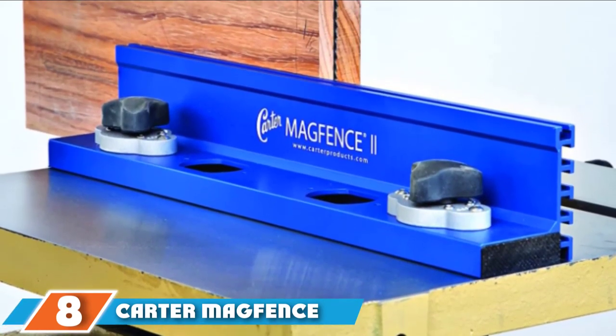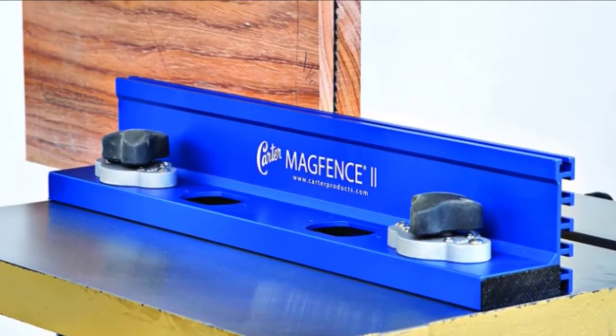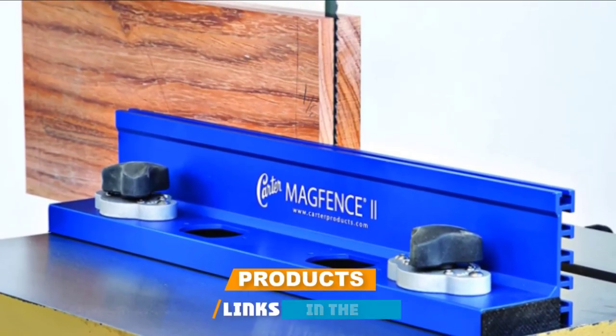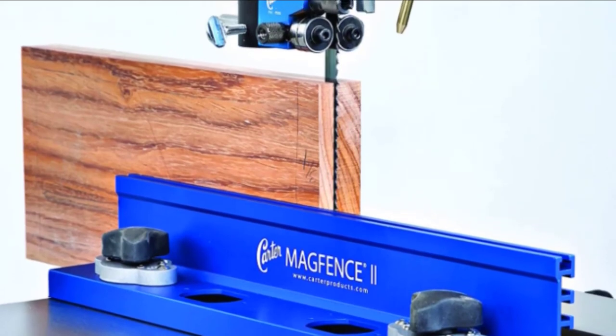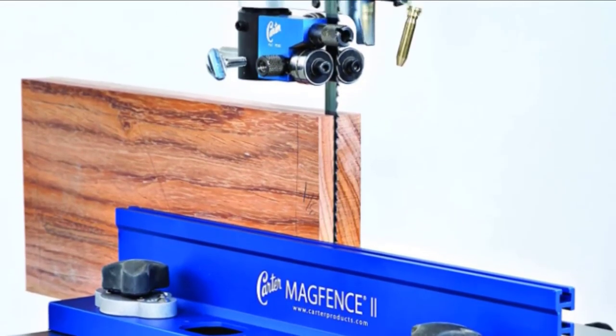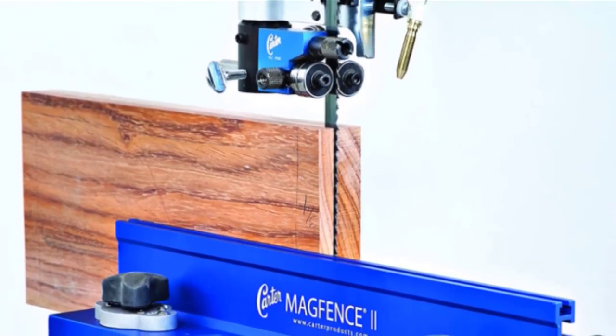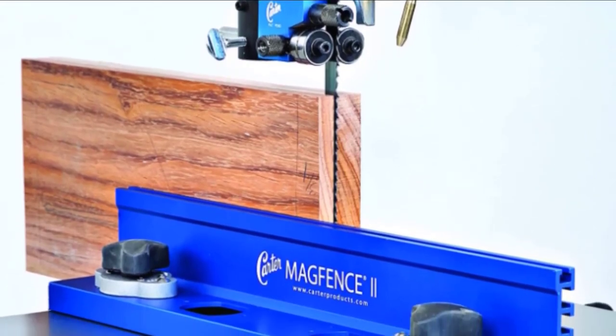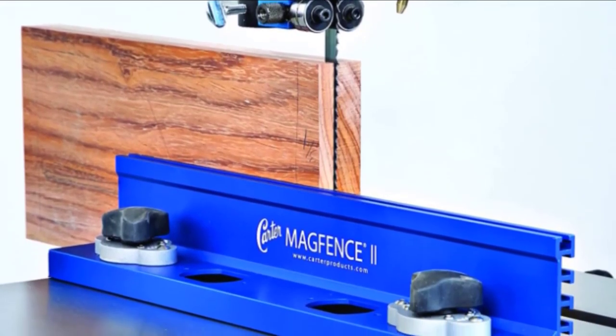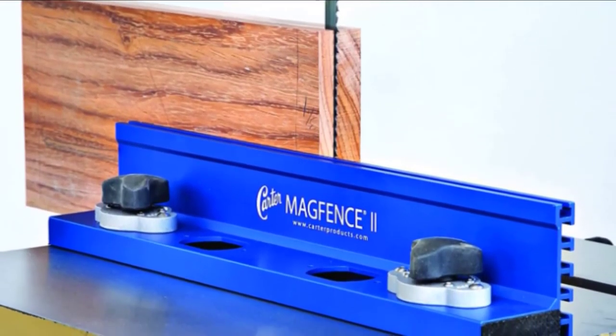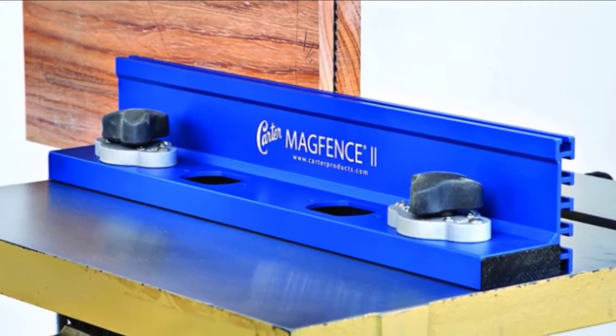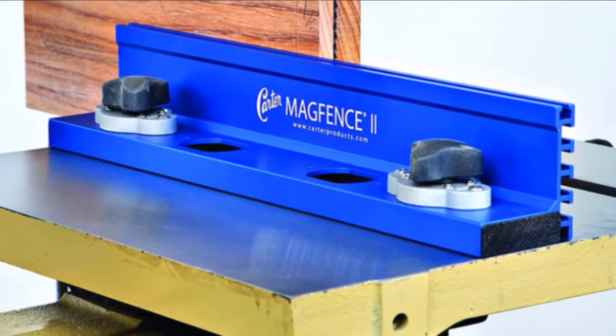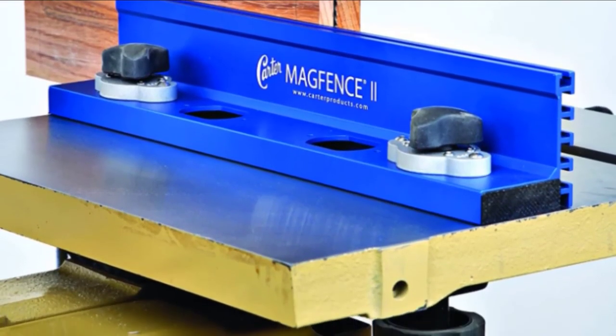The number eight position is held by Kreg KMS7102 universal magnetic fence. Kreg KMS7102 universal magnetic fence is again a beginner-centric model. This product is a bit different. Unlike the other fence models on the list, Kreg utilizes powerful magnets for holding the table fence in place. The fence adheres to almost every metal surface, be it ferrous or non-ferrous, making the fence an ideal fit for the newbies.